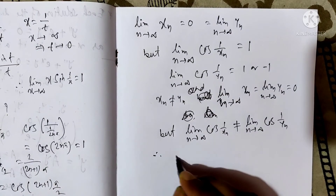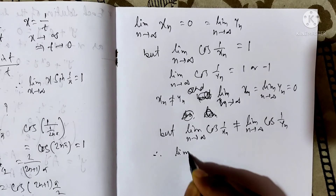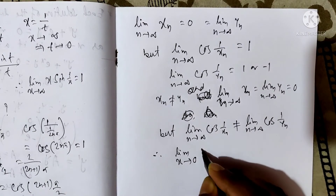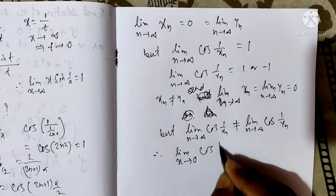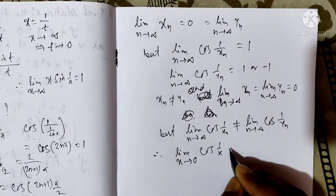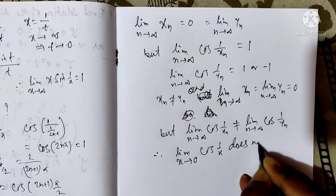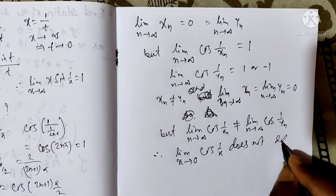Therefore, the limit as x tends to 0 of cos(1/x) does not exist.